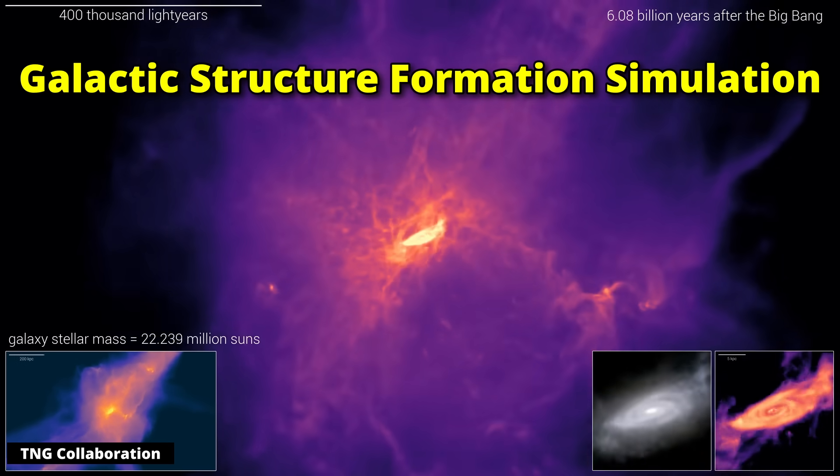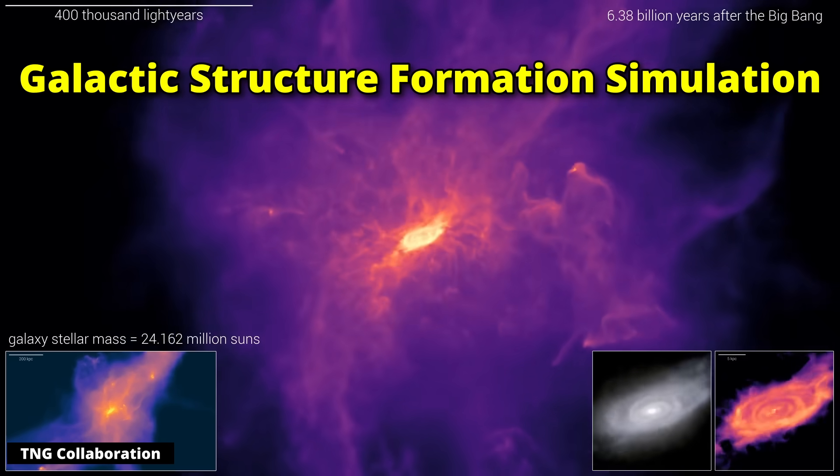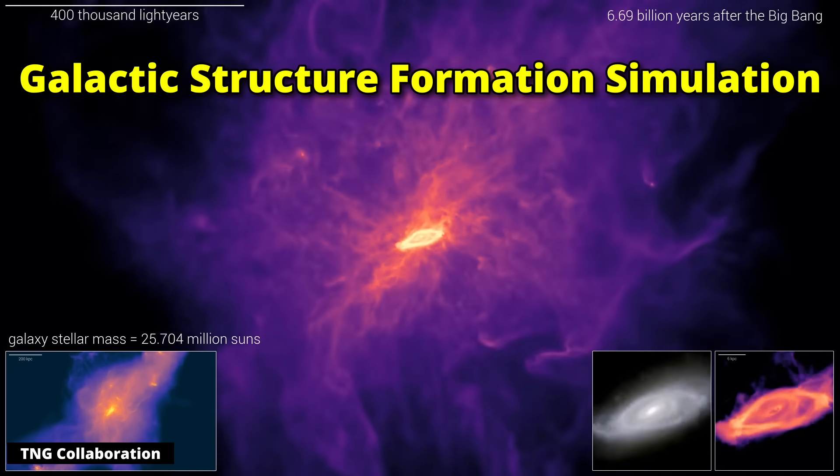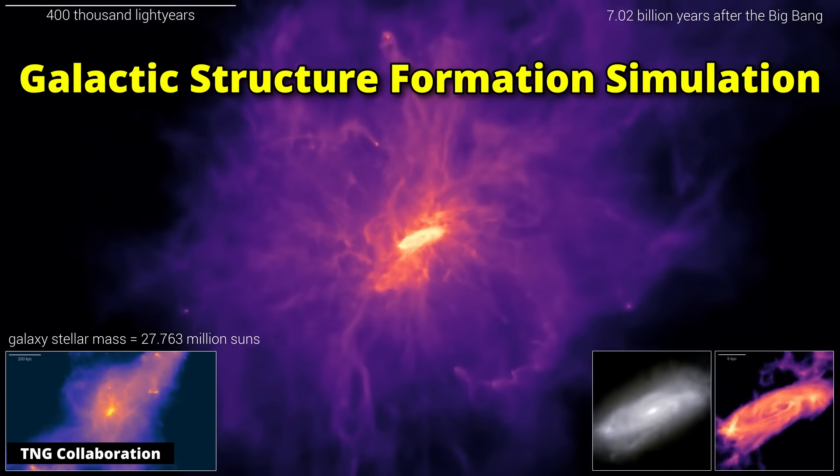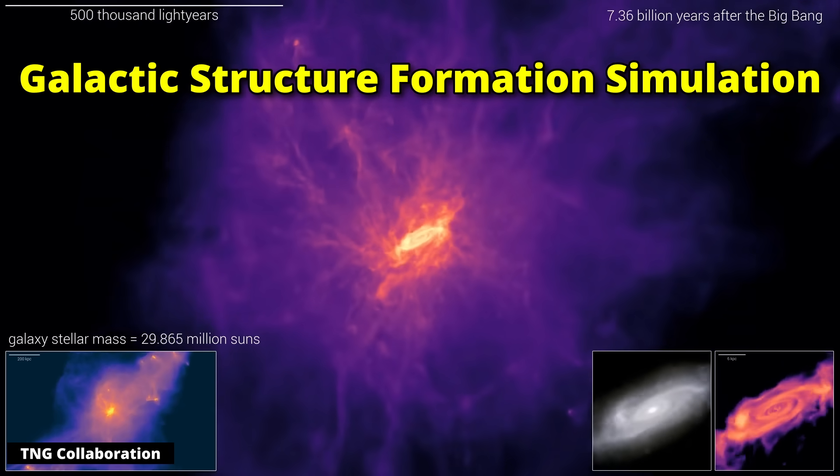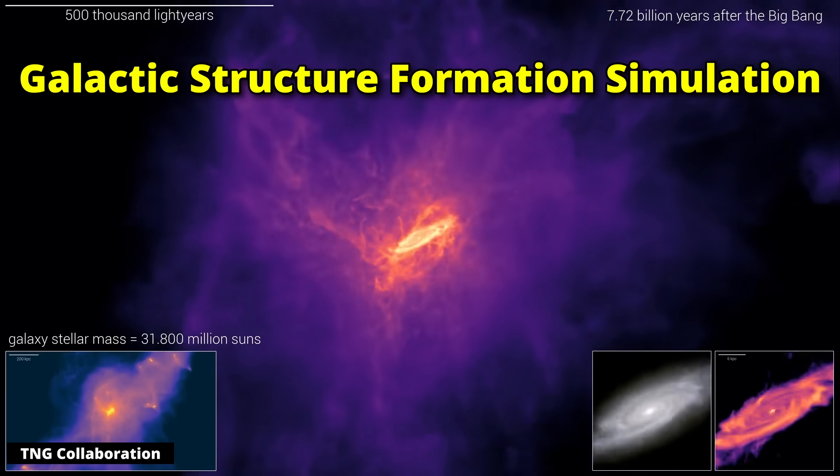The second big unsolved problem is dark matter and dark energy. Let's start with dark matter. This too was first discovered in the 1930s, so it's certainly not a new problem. The issue is that we have a lot of observations that we can't explain with Einstein's theory of gravity, general relativity, plus the matter that we already know of. It just doesn't work.